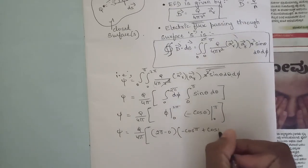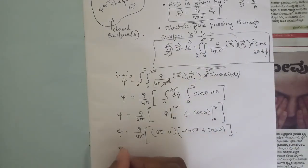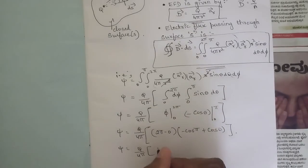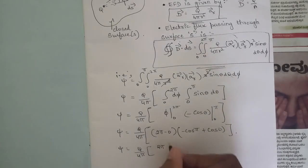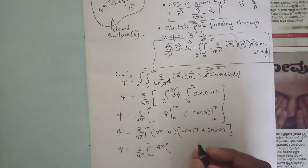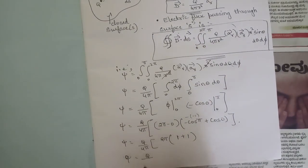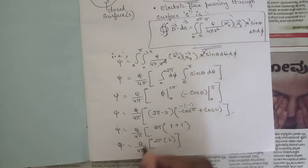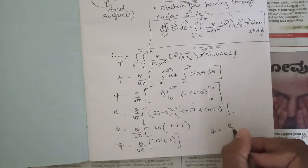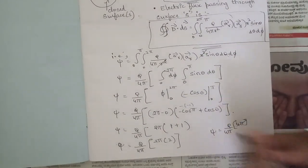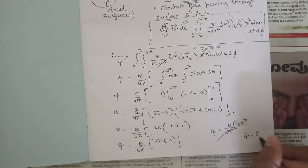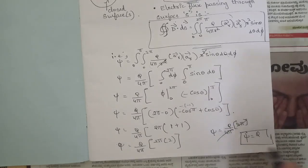Substituting the limits: Q over 4π times (2π − 0) times (−cos π + cos 0). Since cos π equals −1, we get −(−1) = +1, and cos 0 = +1, giving 2. So psi equals Q over 4π times 2π times 2, which is 4π. The 4π cancels, giving psi equals Q.